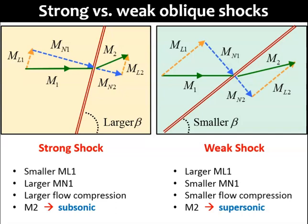Now, that small Mn1 will cause a small flow compression. And because Ml1 is large and is equivalent to Ml2, combining Ml2 and Mn2 will produce a large resultant vector M2, which will remain as a supersonic flow.